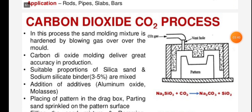Carbon dioxide CO2 process: In this process, the sand molding mixture is hardened by blowing CO2 gas over the mold. Carbon dioxide molding delivers great accuracy in production. Suitable proportions of silica sand and sodium silicate binder (3–5%) are mixed.